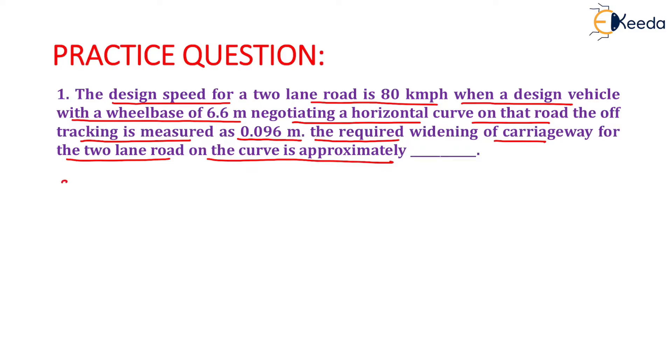The value of mechanical widening is given, and we calculate it for a single lane road using L squared upon 2R. The mechanical widening is 0.096, and the vehicle length is 6.6 meters, so we have 6.6 squared divided by 2R.